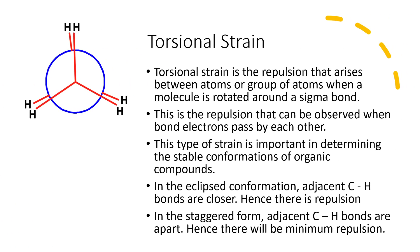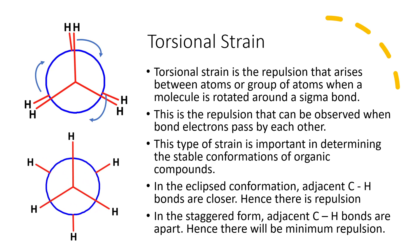Next is torsional strain. Torsional strain is the repulsion that arises between atoms or groups of atoms when a molecule is rotated around a sigma bond. Here I have shown a Newman projection of ethane in eclipsed conformation. If I rotate the back carbon by 60 degrees, I get the staggered conformation. In the eclipsed conformation, all C-H bonds and all hydrogen atoms are facing each other, so there is maximum torsional strain. In the staggered conformation, all C-H bonds are apart and hydrogen atoms are at a distance, so there is minimum torsional strain.